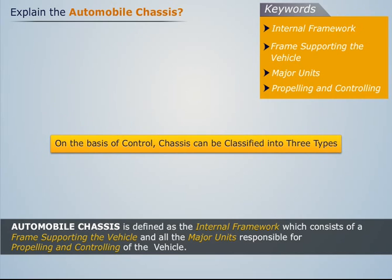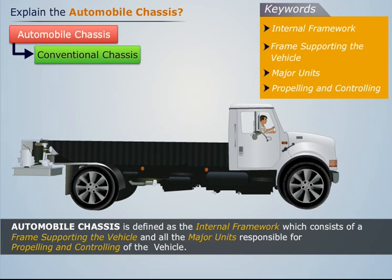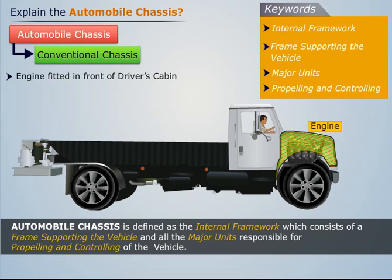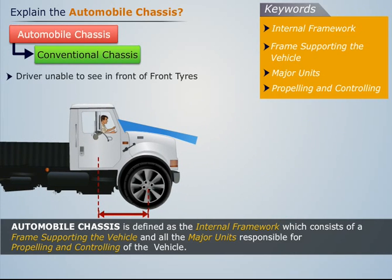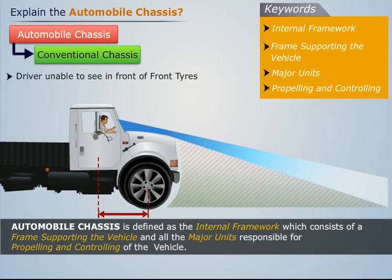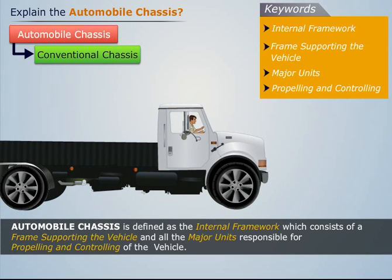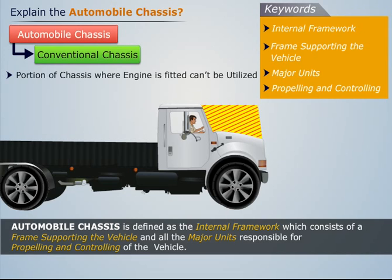On the basis of control, chassis can be classified into three types. In conventional chassis, the engine is fitted in front of the driver's cabin, making the driver sit quite far from the front axle. Due to this, the driver isn't able to see the road just in front of the front tires.